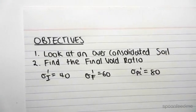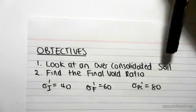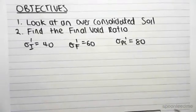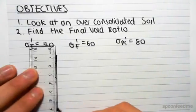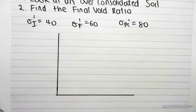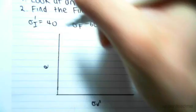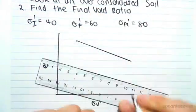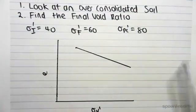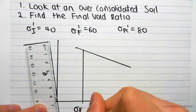So, if I were to draw this, once again I'm drawing the effective stress against the void ratio. So, here's my line. I would initially be at 40 kPa, so sigma i is 40.